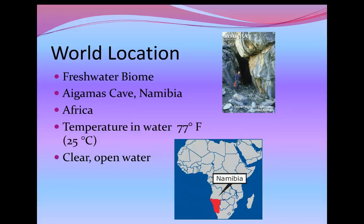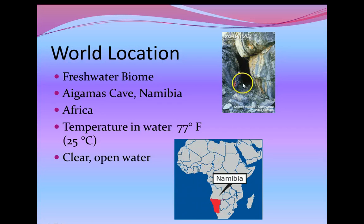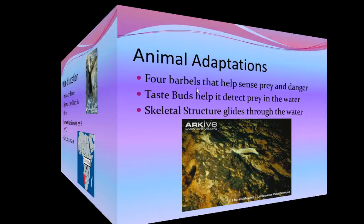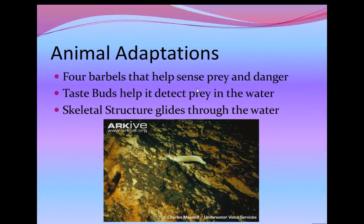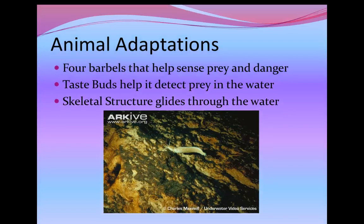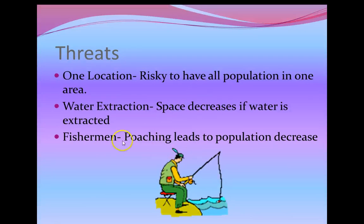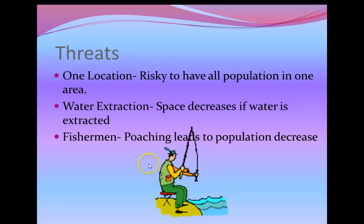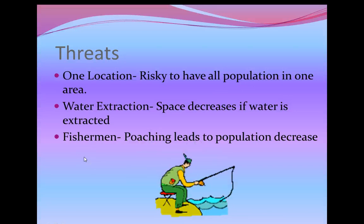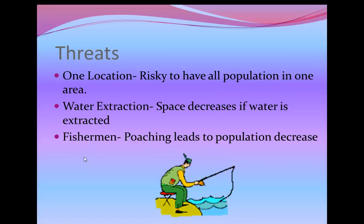She has everything in a bulleted style. She also converted Celsius to Fahrenheit because we understand that better in America. She put in a clip art of the area where the animal lives and also has a picture from archive. Again — nice big words, bulleted style, nice picture, nice title. She went to clip art and found a cute fisherman image because poaching is why her animal is endangered, and that works nicely for that slide.